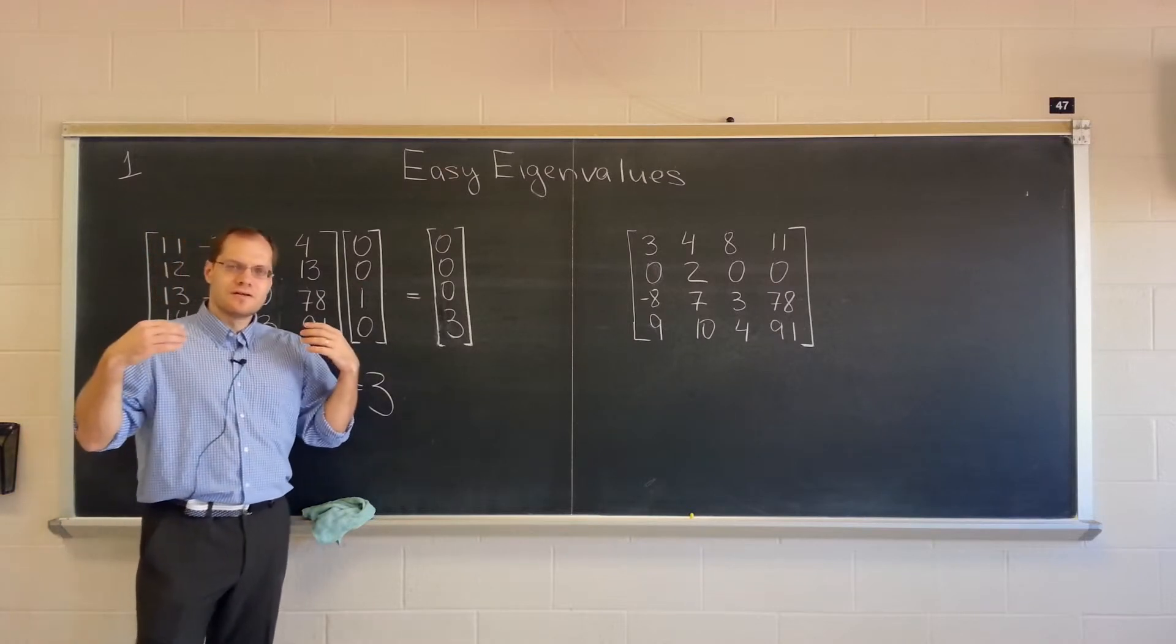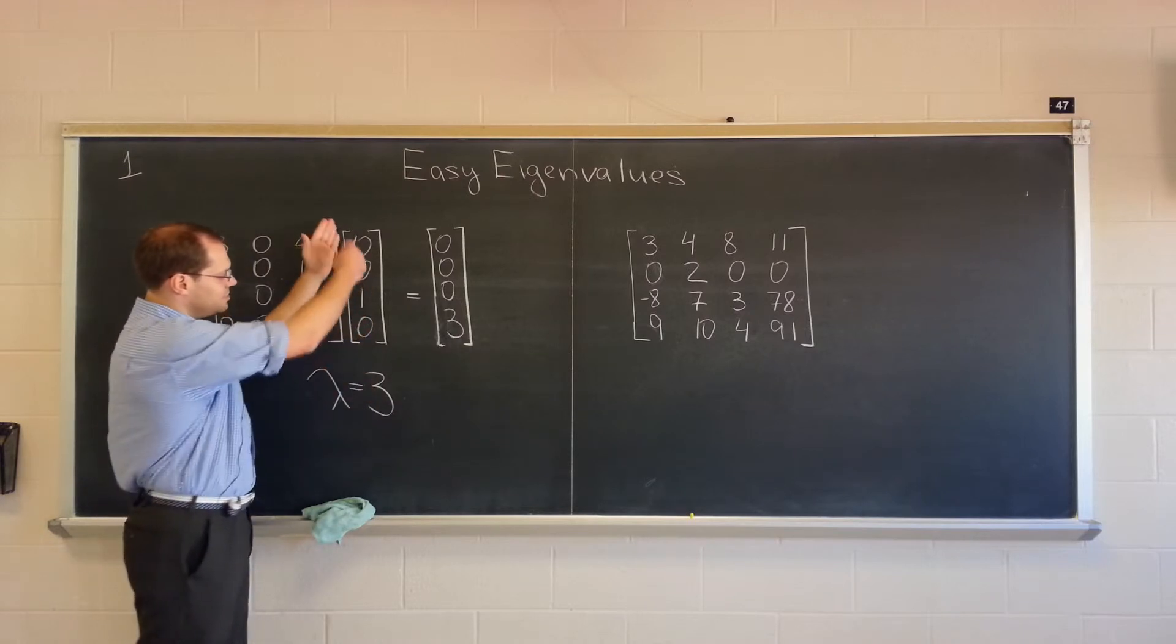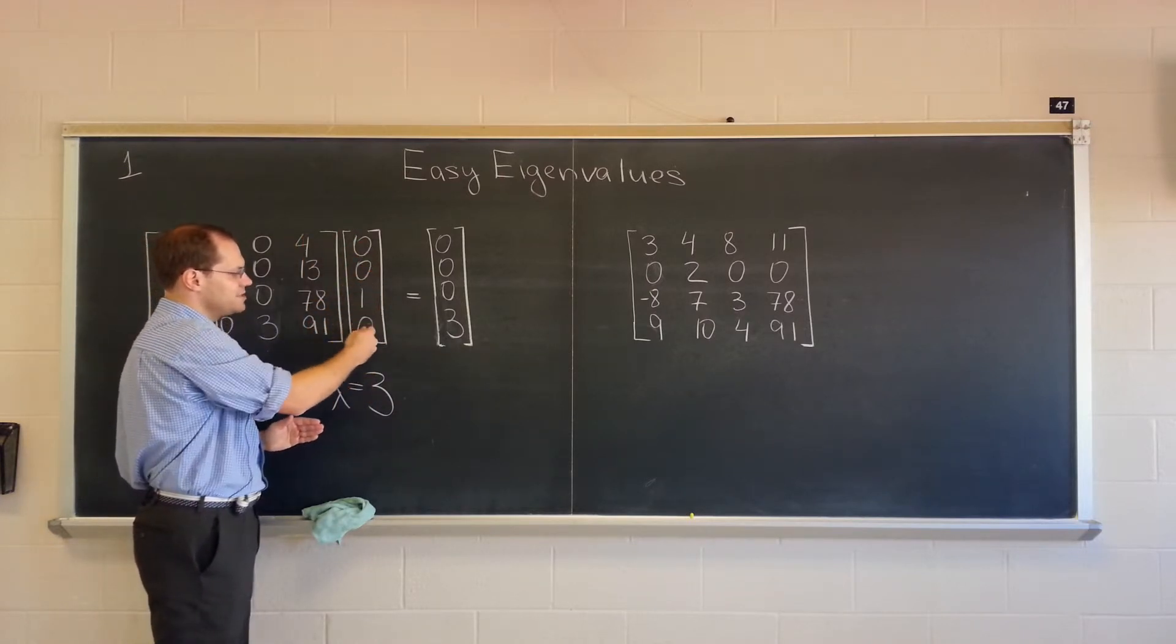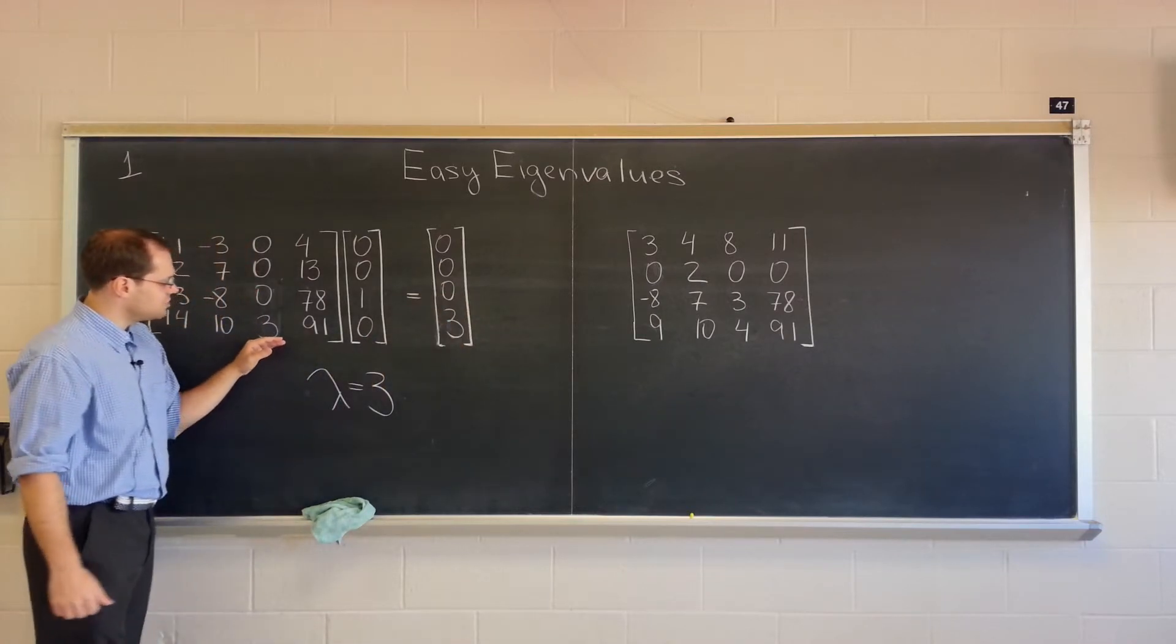Because if you attempted to say that yes, this vector is three times this one. Well, three times this one is zero, zero, three, zero. Which is not the same as zero, zero, zero, three.